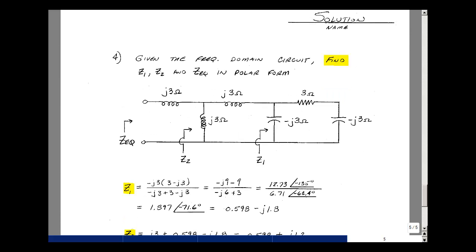Problem four is given a frequency domain circuit to find the impedance Z1 looking back to the right, Z2, and then Z-equivalent. We're given the impedances of the inductors, the capacitors, and the resistor, so we can do series and parallel combinations. Z1 is going to be the parallel combination of minus j3 ohms with the series combination of 3 minus j3. We take that impedance as the product over the sum.